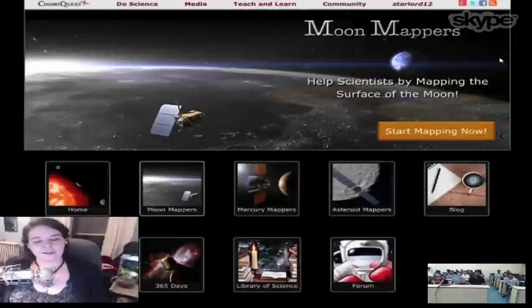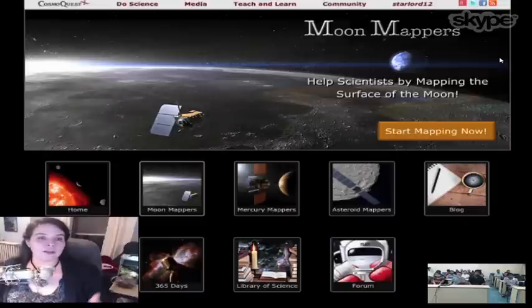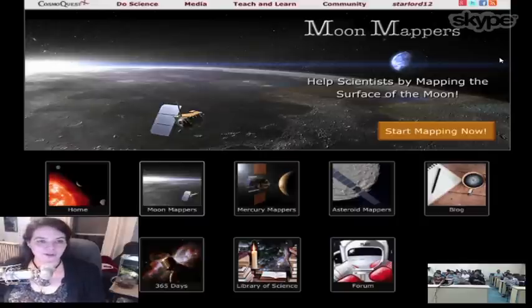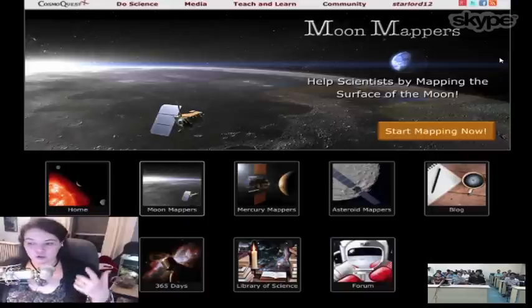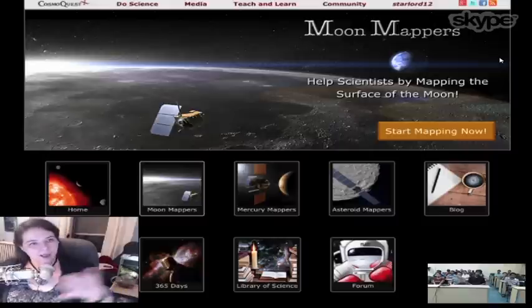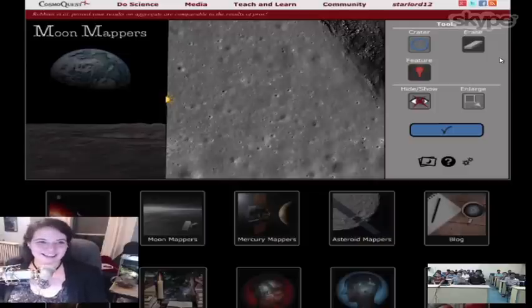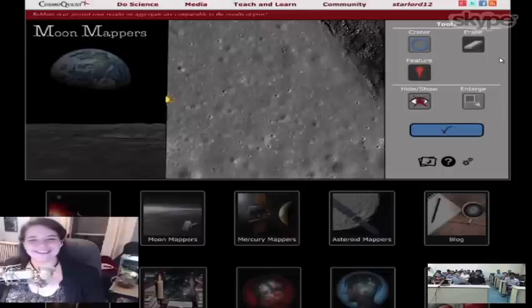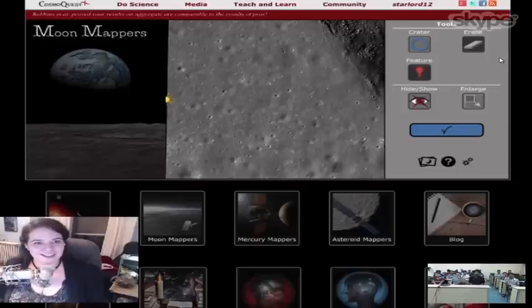What a group of us did is create this website called CosmoQuest. Our goal was to create much easier to use crater mapping software than what professional scientists use. In fact, they now come use our software sometimes. We wanted to create easy to use mapping software and train people the same way we train our students. When you look at it, you realize the moon is totally covered in craters. This is going to take a while to map. You sit and drink your tea and map the craters. You find where are the scientifically interesting places and where are the safe places to land robots.